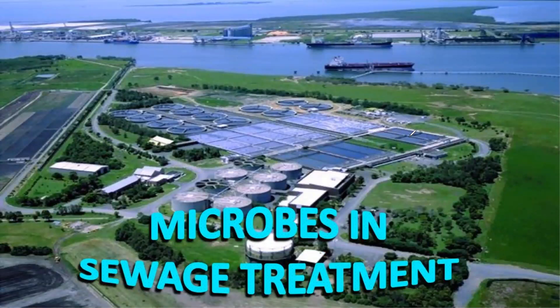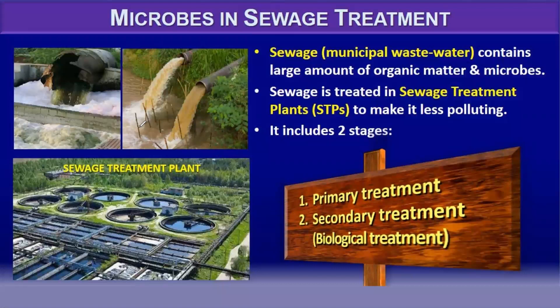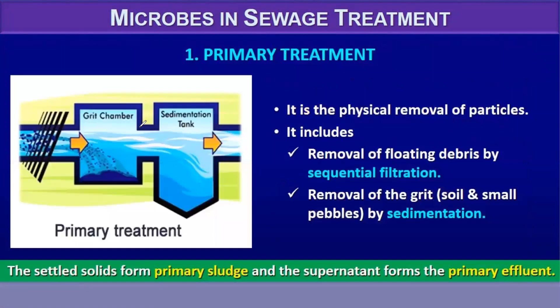Now we will move to microbes in sewage treatment. Sewage is municipal wastewater containing large amounts of organic matter and microbes. It is treated in sewage treatment plants (STPs) to make it less polluting, in two stages: primary treatment and secondary treatment. In primary treatment, physical particles are removed — floating debris, grit (soil and small pebbles) — by sedimentation. The settled solids form primary sludge and the supernatant forms the primary effluent.